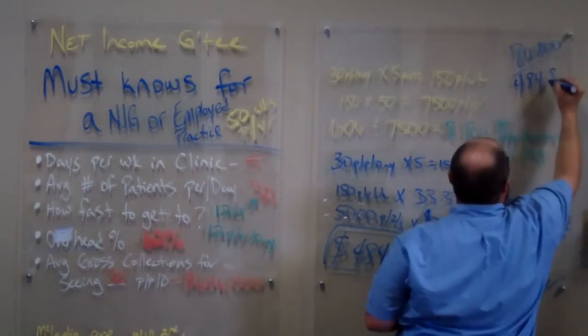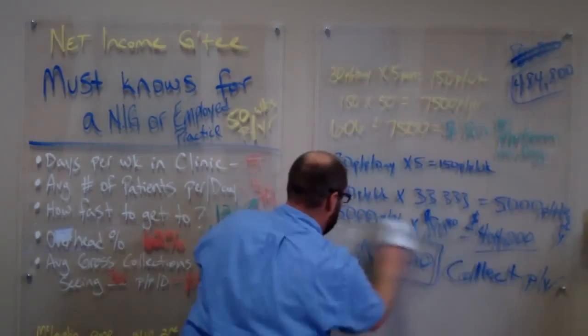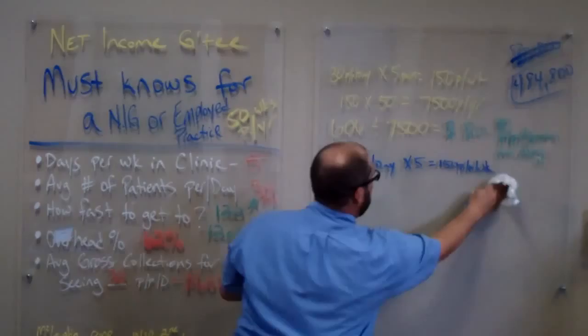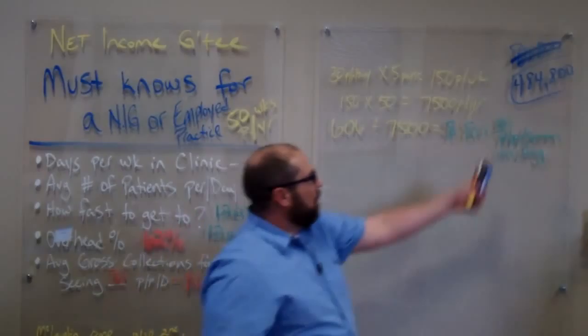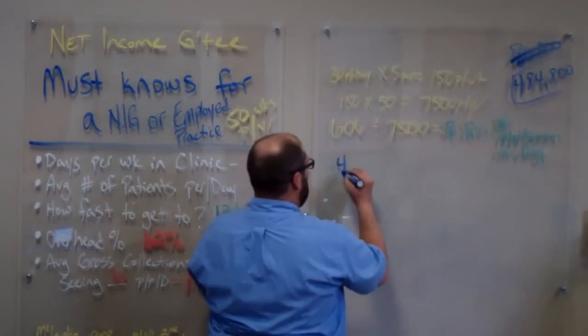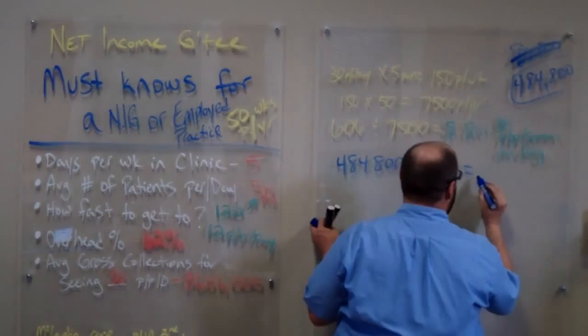Let me stop here and erase, and we'll come back. Tell you what, $484,800 total. Now let me erase this. So our total collection is $484,000 a year.